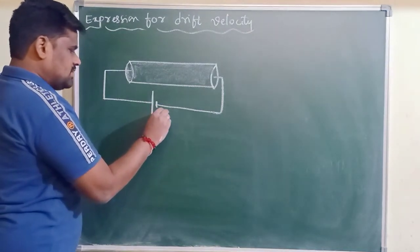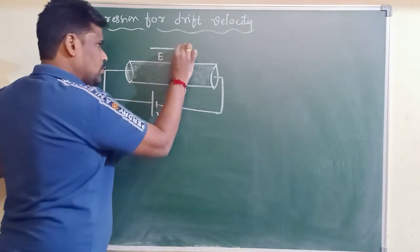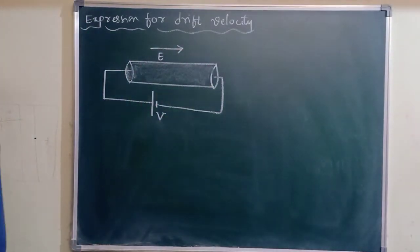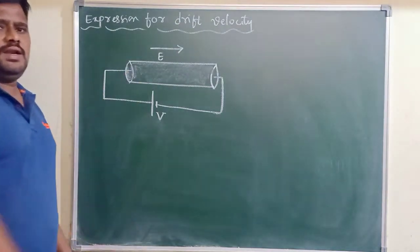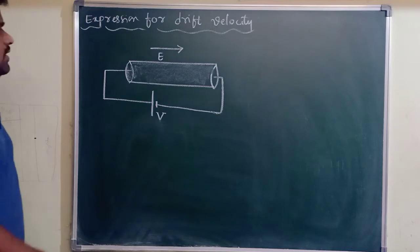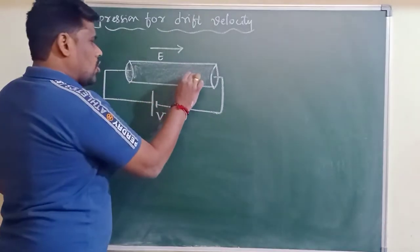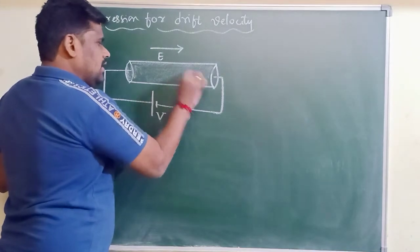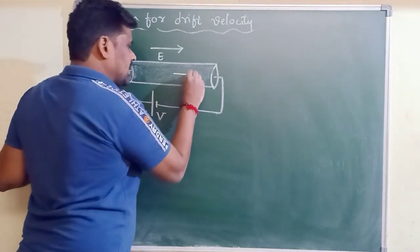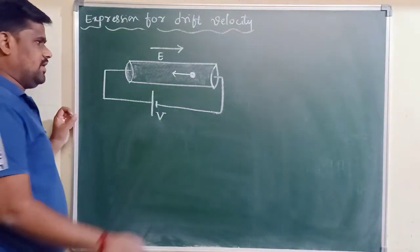When the potential difference is applied across a conductor, you know very well the electric field is going to be set up. E is the electric field set up in a conductor when you apply the potential difference. When the electric field is set up, each of the free electrons in a conductor are going to experience a force in the direction opposite to the direction of the electric field.